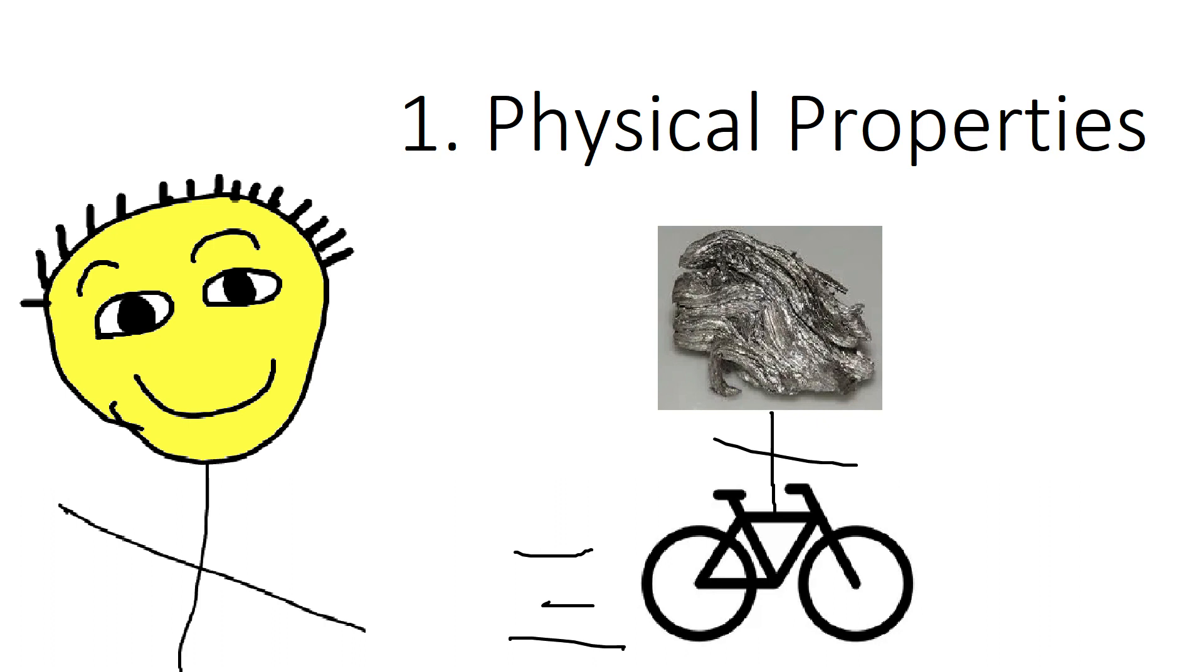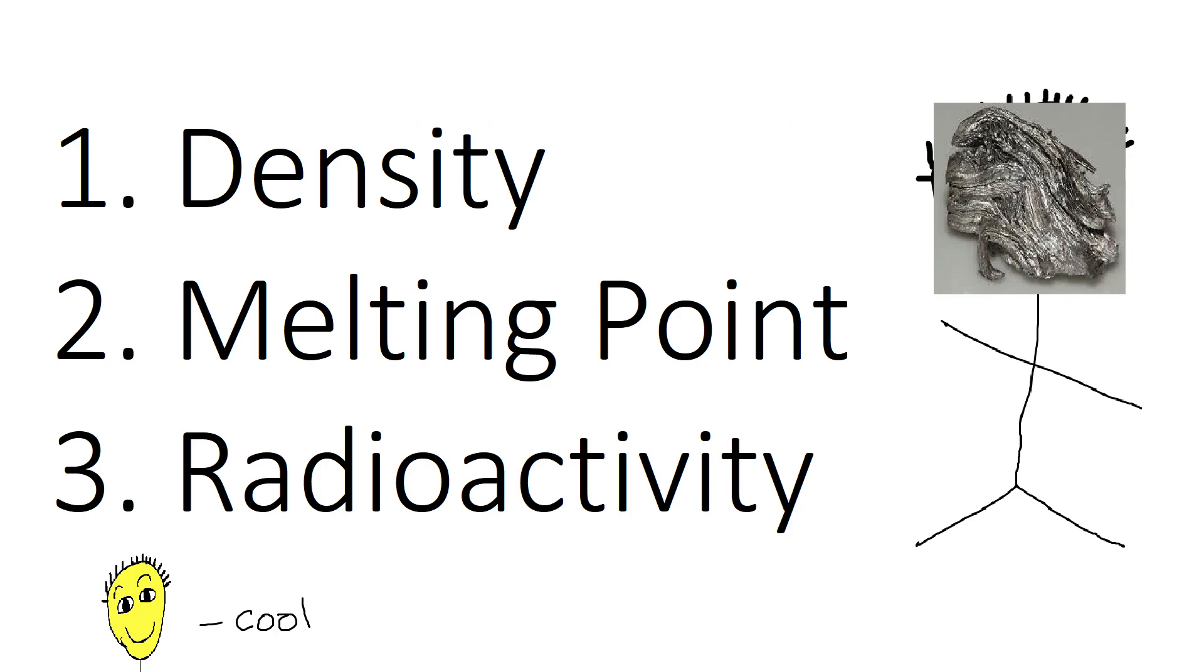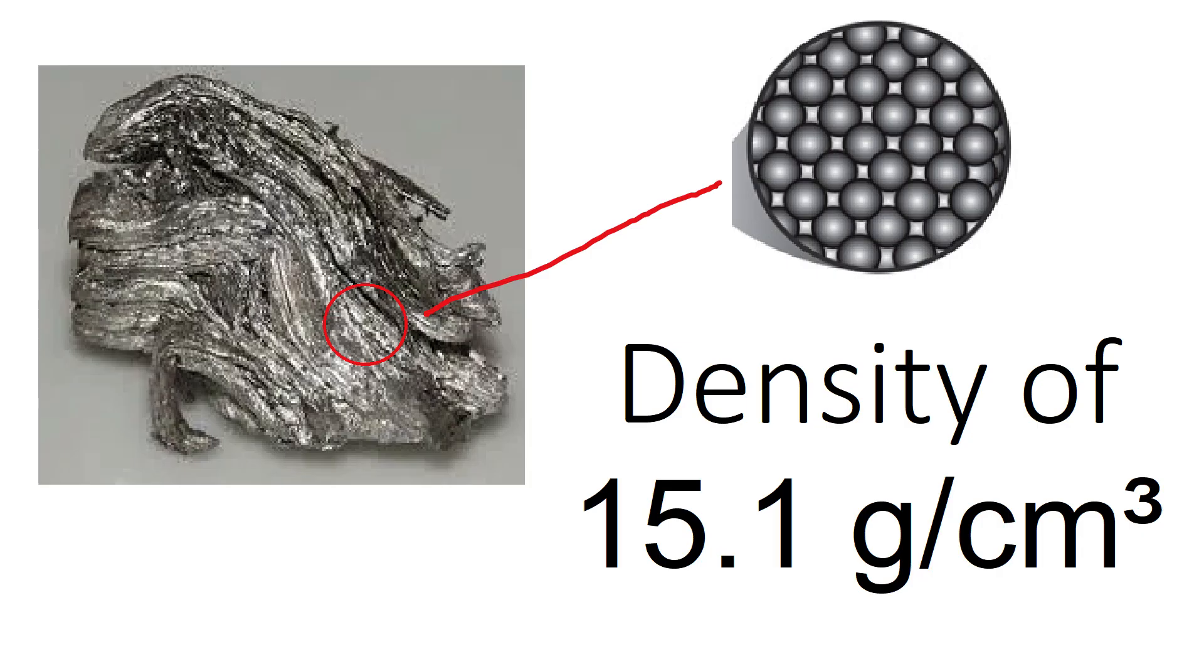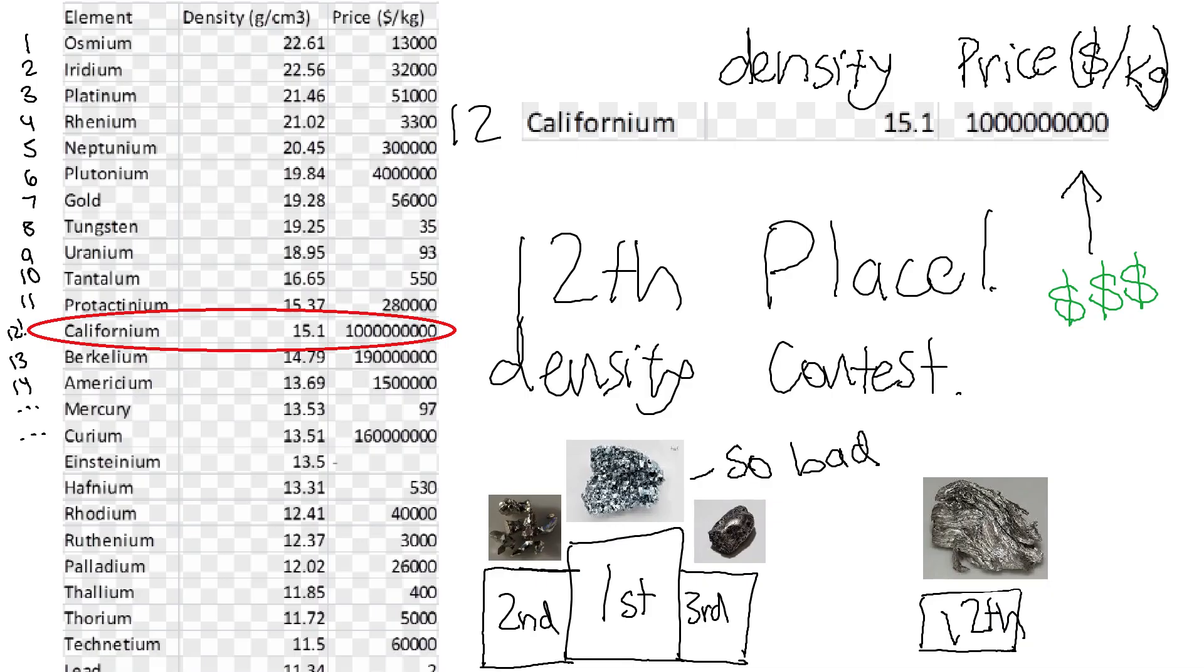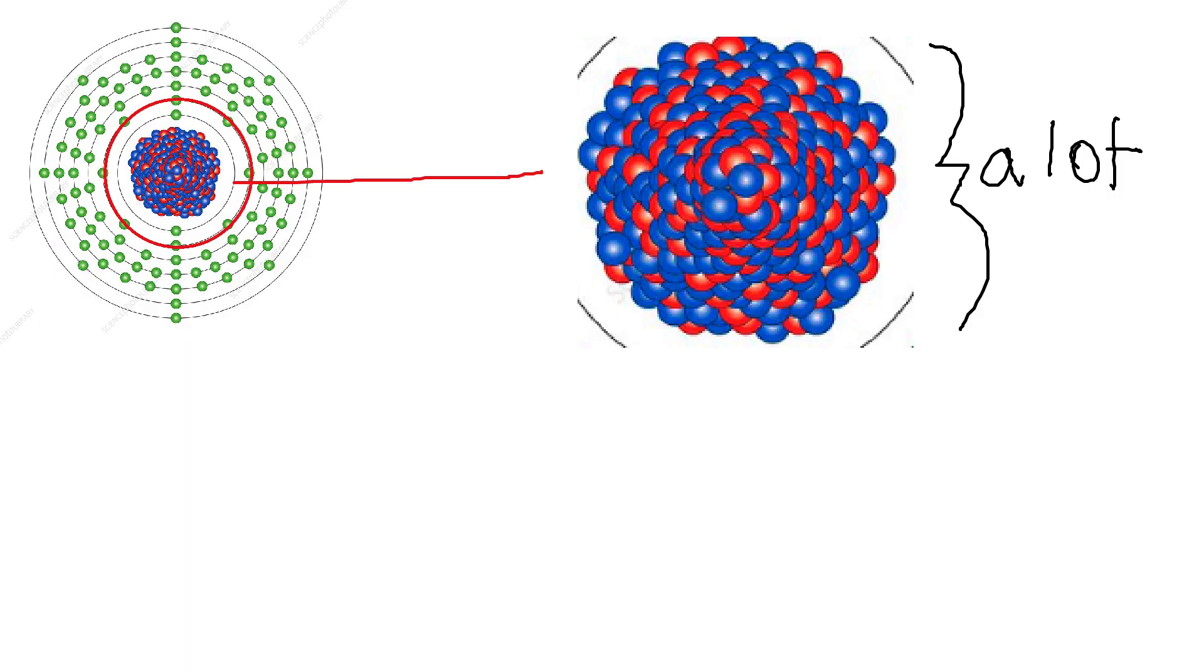Number 1, physical properties. I will be going over three very cool physical properties of Californium: the density, melting point, and radioactivity. Californium is a dense metal with a density of around 15.1 grams per centimeter cubed, one of the densest elements on the periodic table. This is because Californium has a lot of protons and neutrons in the nucleus for all known isotopes.